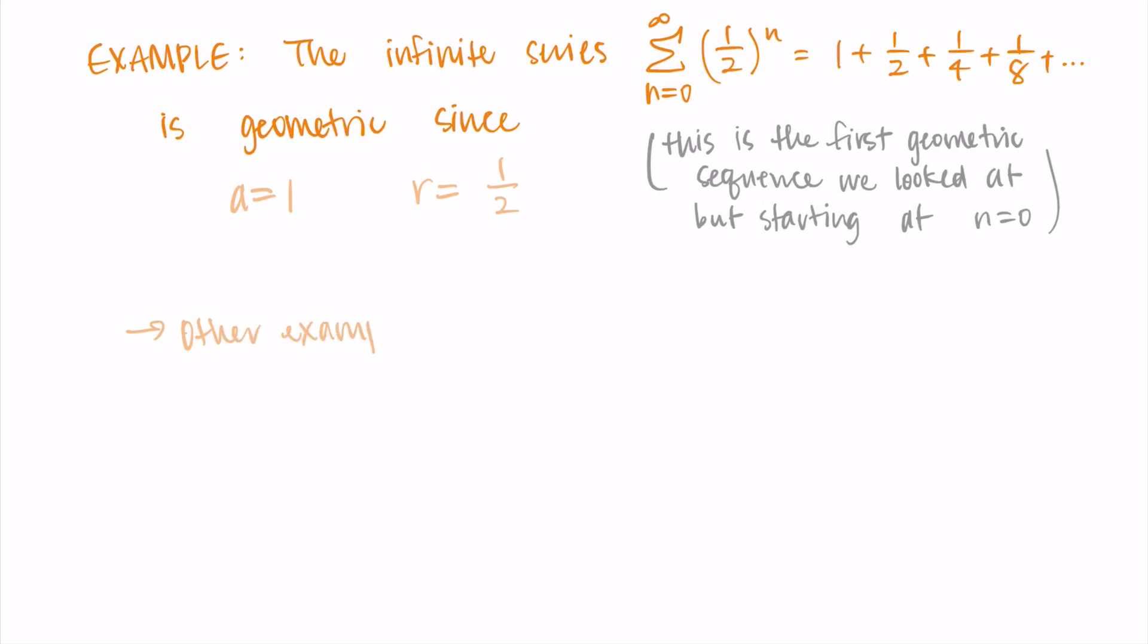Some other examples of what a geometric series might look like is the sum from n equals 0 to infinity of 3(5)^n, or it could be the sum from n equals 0 to infinity of 1/π times (3/2)^n. So both a or r can be fractions.